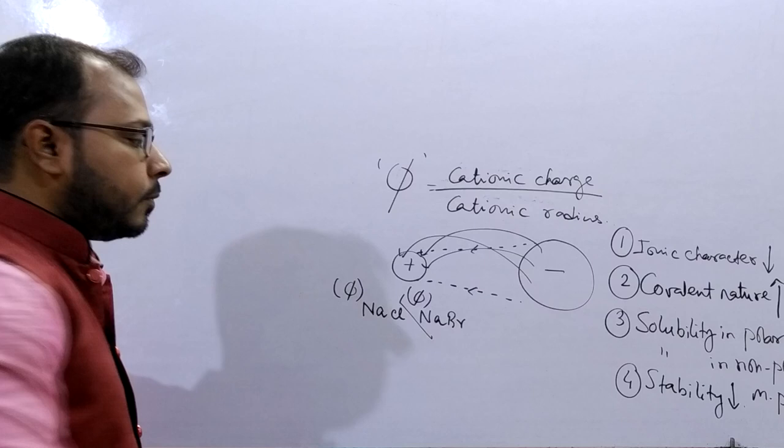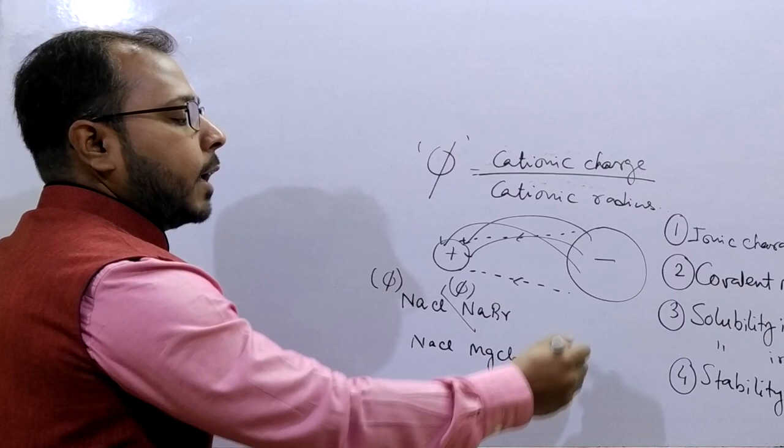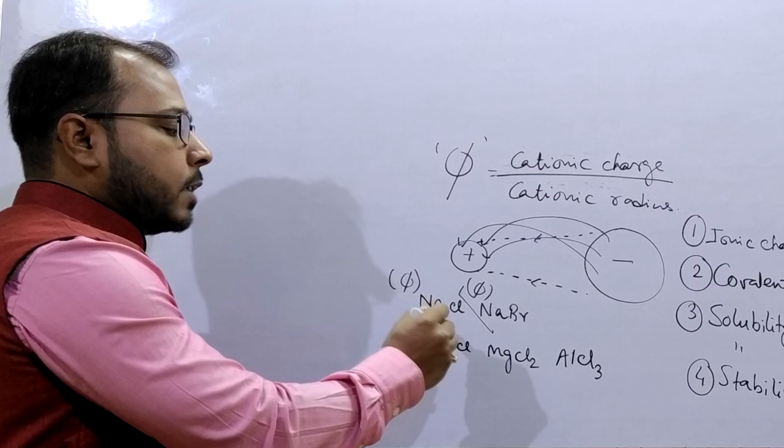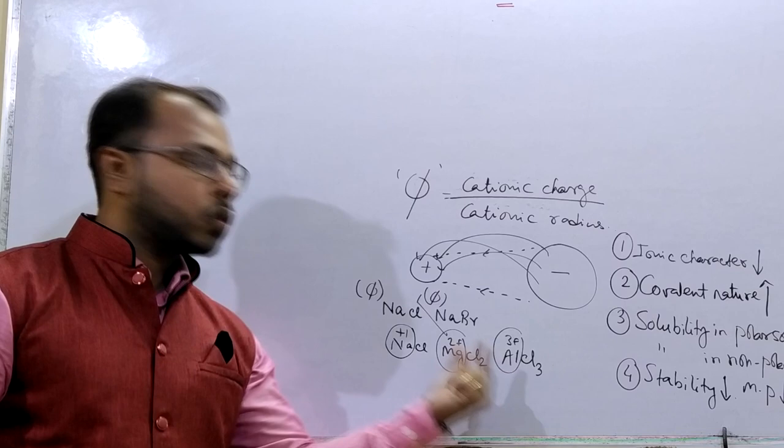Similarly if anionic nucleus is fixed, for example NaCl, and if we take the example of MgCl2, AlCl3, then here Cl- is fixed. But as it is +1, it is +2, and it is +3, thereby what is happening, this is more electron deficient so it will attract the Cl- towards itself in a more rapid manner.